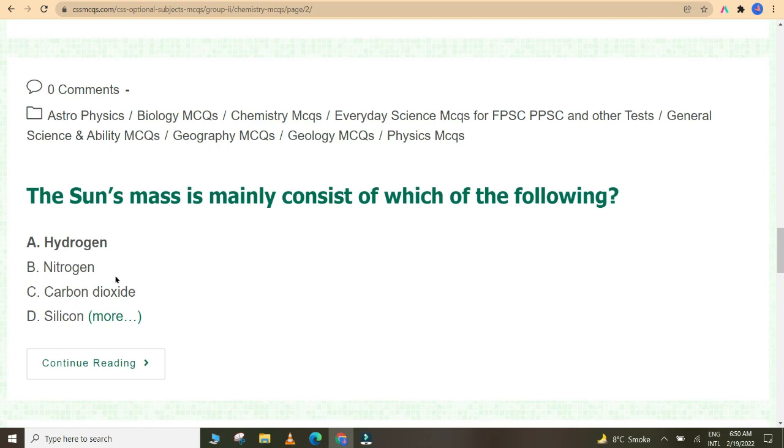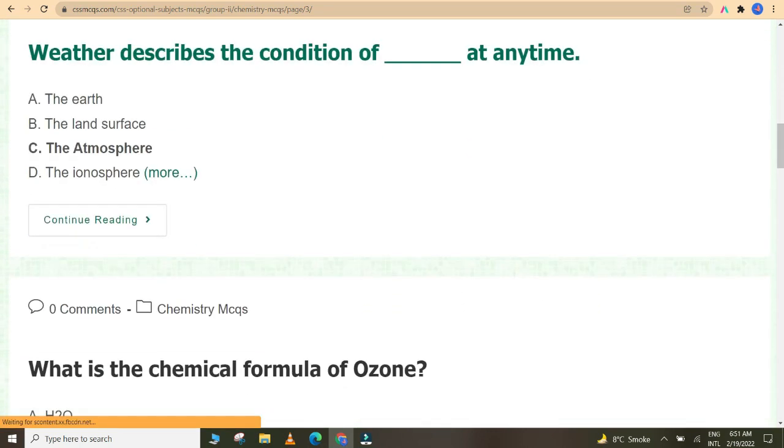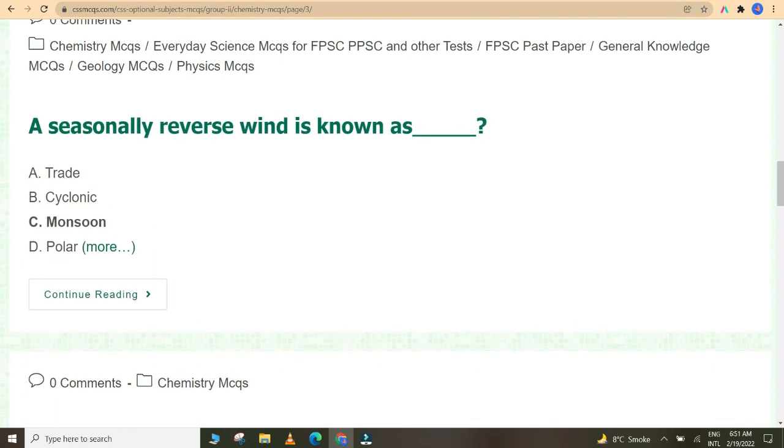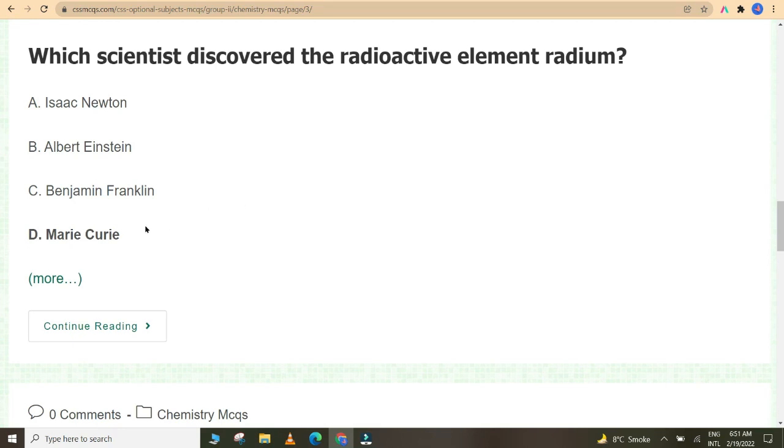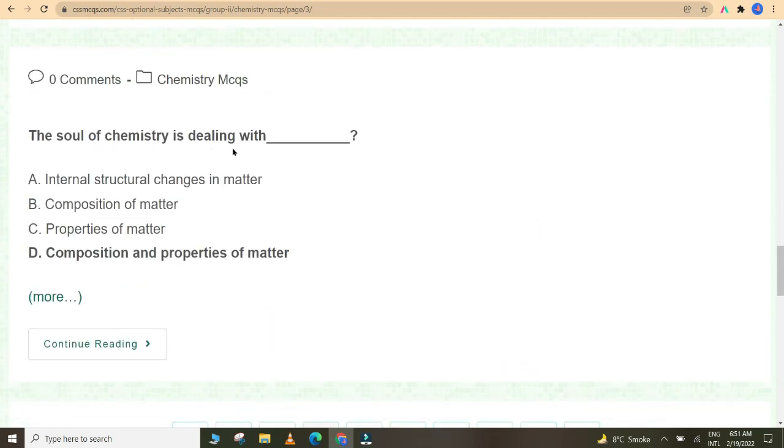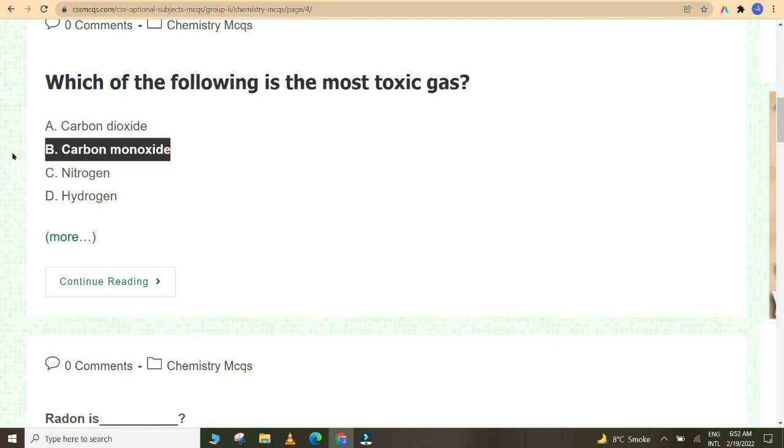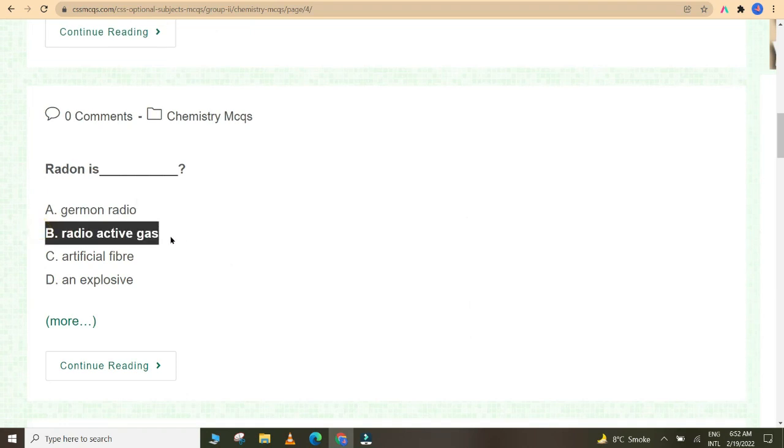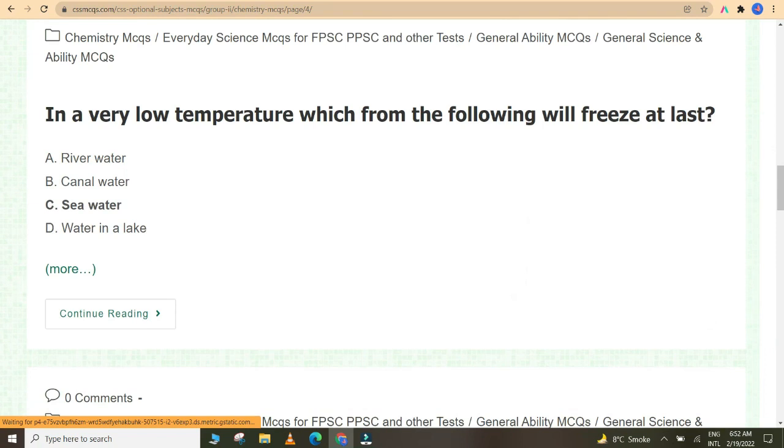The sun's mass is mainly consists of hydrogen. Christian Friedrich Schönbein's discovery is ozone. Weather describes the condition of the atmosphere at any time. What is the chemical formula of ozone? O3. A seasonally reverse wind is known as monsoon. Which scientists discovered the radioactive element radium? Marie Curie. Nail polish removal contains acetone. The soul of chemistry is dealing with composition and properties of matter. Which of the following is the most toxic gas? Carbon monoxide. Radon is radioactive gas. During winter in cold countries, salt is mixed to melt the ice on icy roads. In a very low temperature, which from the following will freeze at last? Seawater.